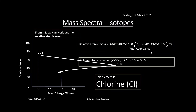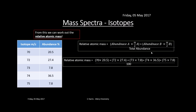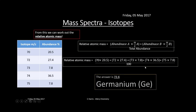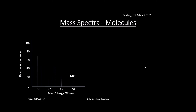You can also do this through tables, not just spectra. This example has more isotopes — we don't know the element or RAM yet, but we work it out using the same equation: multiply each isotope mass by its abundance, add them all up, divide by 100 since it's percentage abundance. The answer is 72.6, which means this element is germanium — check it in the periodic table.